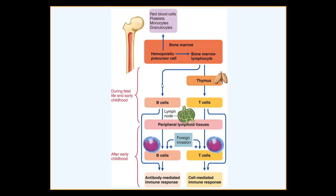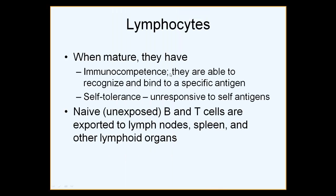B cells are synthesized in the red bone marrow, mature there, and then leave. Some circulate in blood, while many hunker down in secondary lymphoid tissues. Once mature, lymphocytes — whether T or B — must be immunocompetent, meaning able to recognize and bind to a specific antigen. The second requirement is self-tolerance: they must not respond to self-antigens.